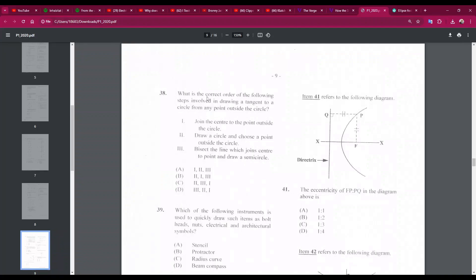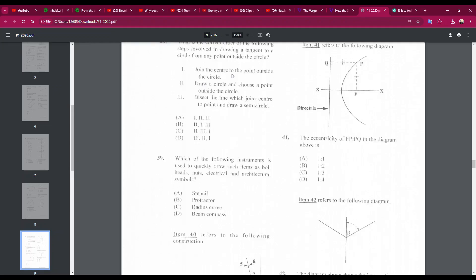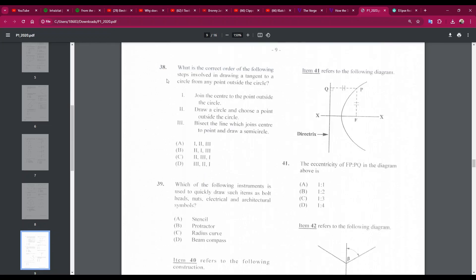Number 38: what is the correct order of the following steps involved in drawing a tangent to a circle from any point outside the circle? So we have join the center to the point outside the circle. Draw a circle and choose a point - okay, so this would be the first step. Bisect the line which joins center to point. So the first step is 2. So the answer is either B or C. First we're going to draw the circle and choose a point outside the circle. Then we are going to join the center of the circle to the point. And the last thing we're going to do is bisect the line which joins them. So it's 2, 1, 3, so the answer is B. Number 38B.